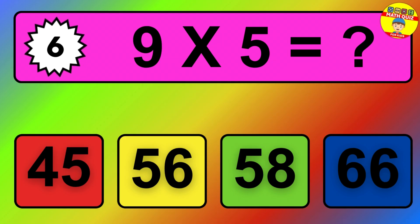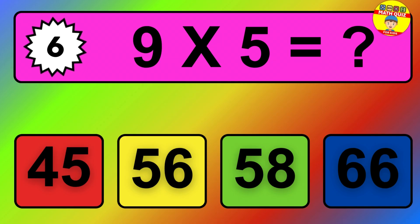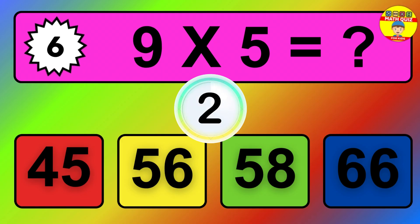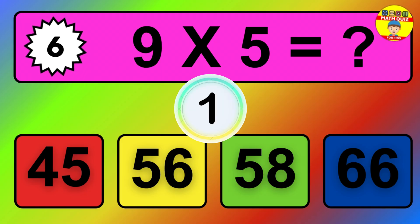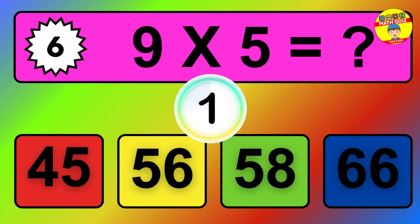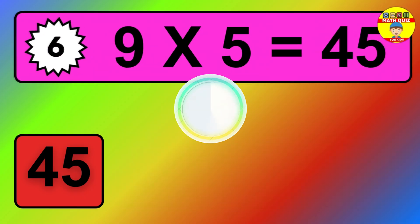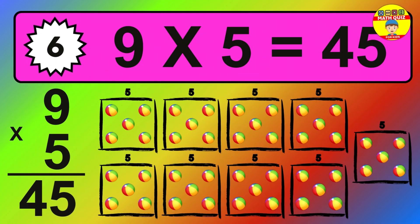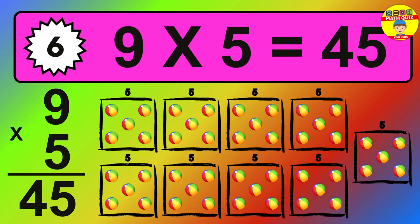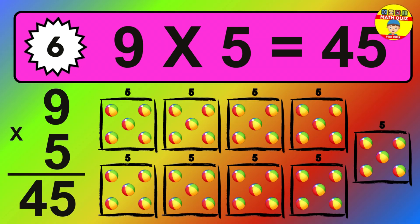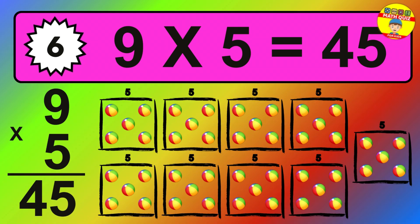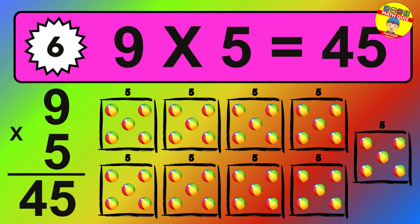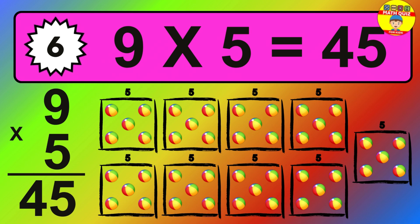Question six: nine times five equals what? The answer is: nine times five is forty-five. To calculate, we have nine groups with five balls each one. So how many balls do we have? Forty-five balls.